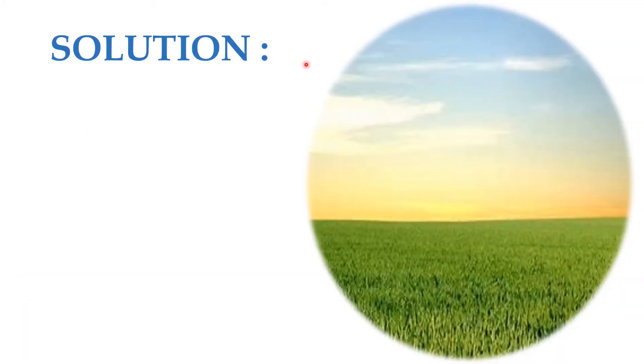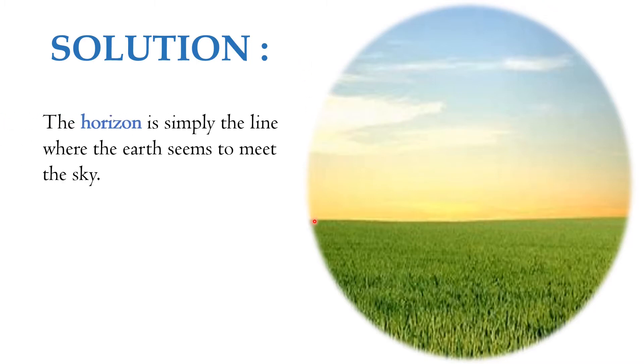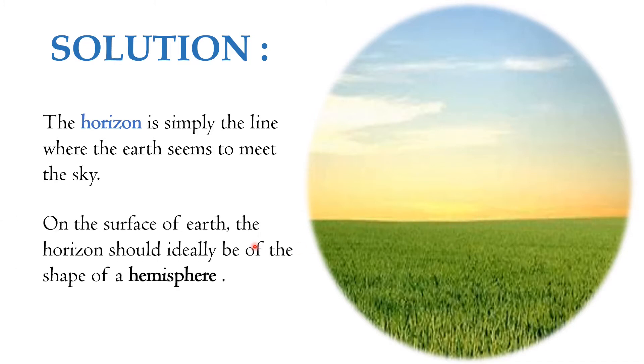Solution. Let us take a look at some of the terms involved in this question. The horizon is simply the line where the earth seems to meet the sky. On the surface of earth, the horizon should ideally be of the shape of a hemisphere.